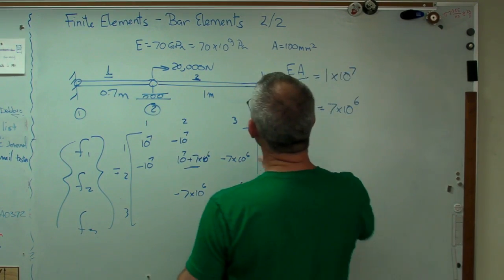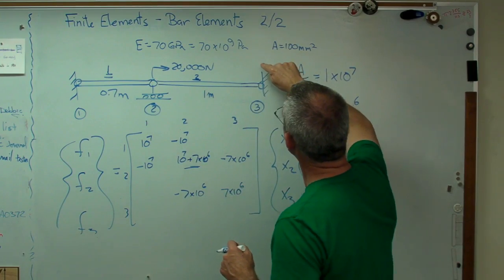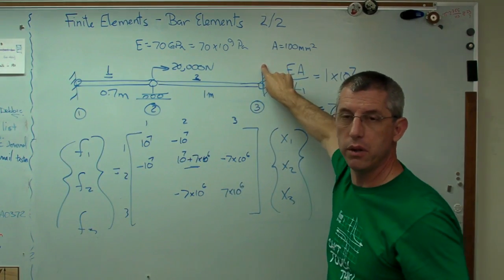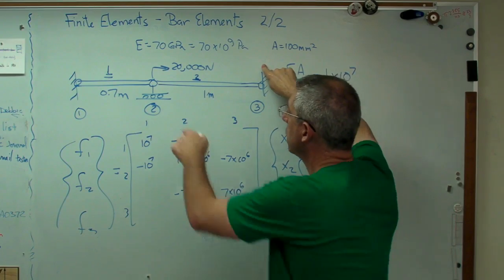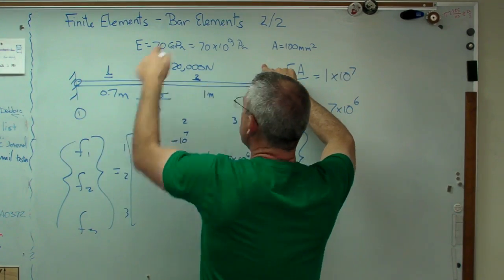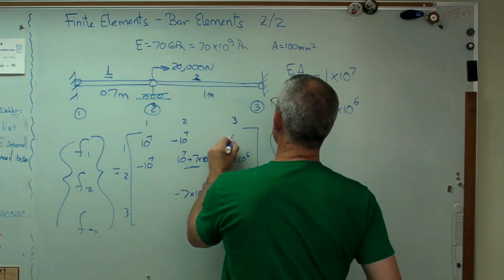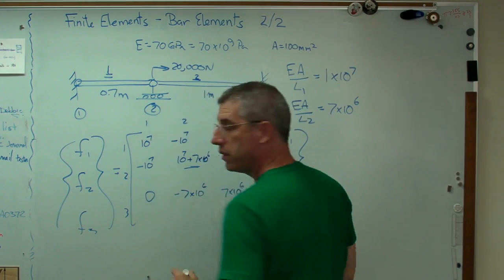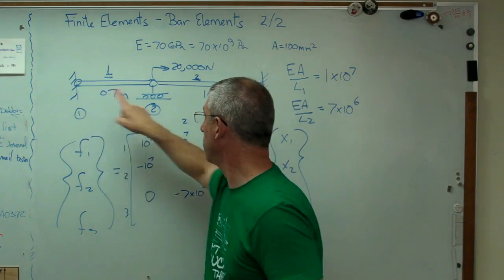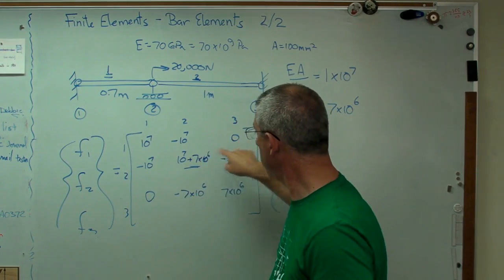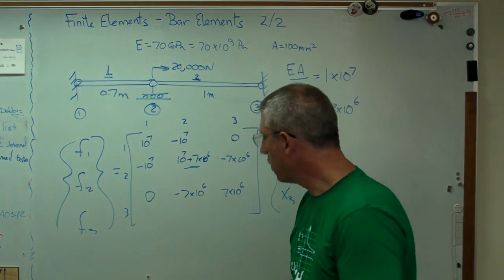Well, is there any stiffness contribution between grid point three and grid point one? No. There's no element that connects those. There's something that connects two, but there's nothing that goes directly from one to three. There's no effect of grid point three on grid point one. And because this is symmetric, there's no effect of grid point one on grid point three. So both of those are zero.